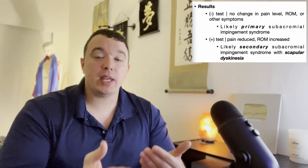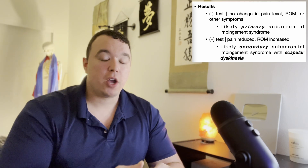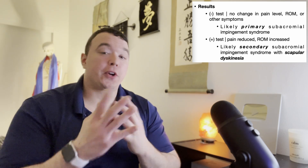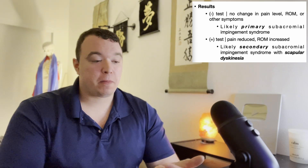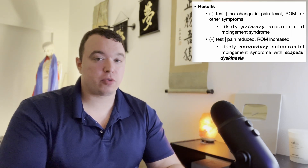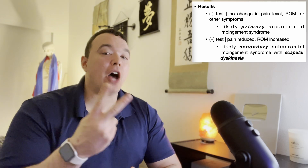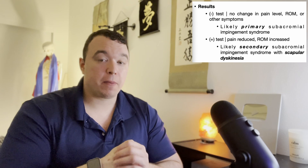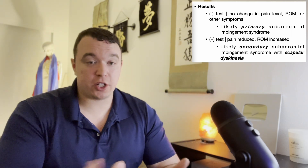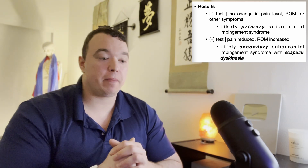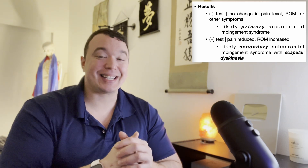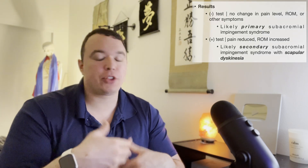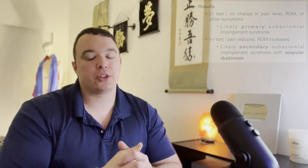At the start of this video we said the three upward rotators of the scapula are the upper traps, the lower traps, and the serratus anterior. In the vast majority of patients there's already going to be sufficient strength in the upper traps — it's generally the serratus anterior and the lower traps that are going to have some weakness. In this scenario, which would be consistent with secondary subacromial impingement syndrome with scapular dyskinesia, you'd want to focus on strengthening the lower traps and the serratus anterior, and the upper trap if weakness is found there as well.